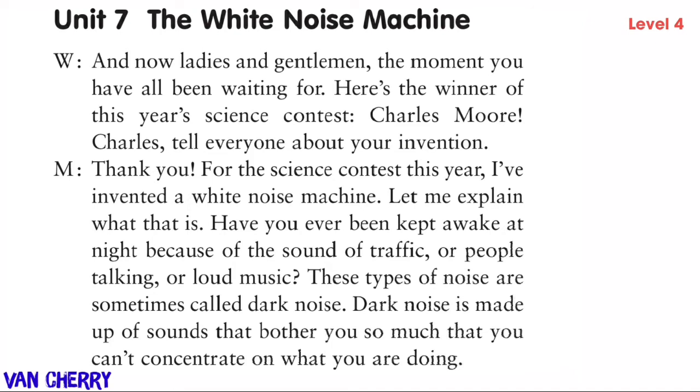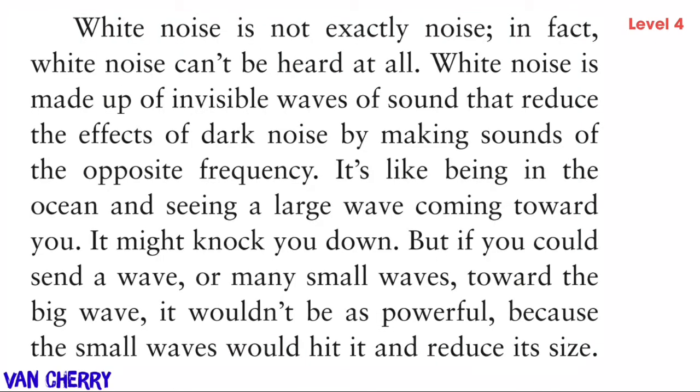These types of noise are sometimes called dark noise. Dark noise is made up of sounds that bother you so much that you can't concentrate. White noise is not exactly noise — in fact, white noise can't be heard at all. White noise is made up of invisible waves of sound that reduce the effects of dark noise by making sounds of the opposite frequency.